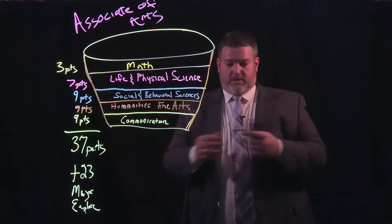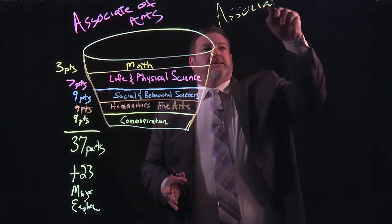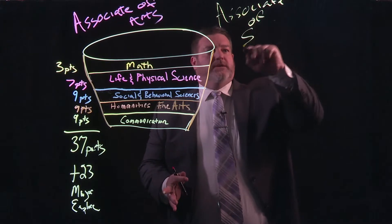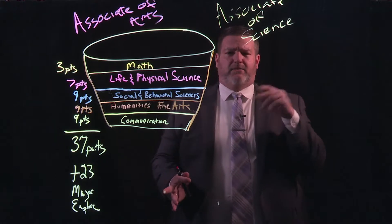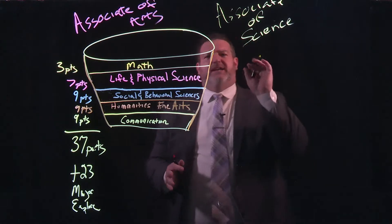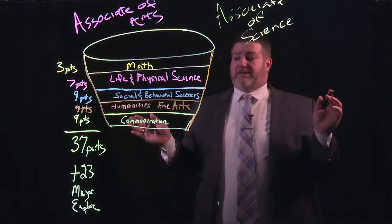But now, what's the big difference between that and the Associate of Science? Can we put an echo effect in there? Associate of Science, Science, Science. All right. Again, I told you the spoiler already. There's not a lot.